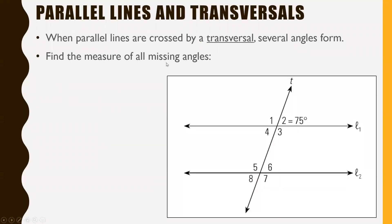First of all, parallel lines and transversals. When parallel lines — more than one — are crossed by a transversal, which is just a line that crosses through both parallel lines, several angles form. Find the measure of all missing angles.